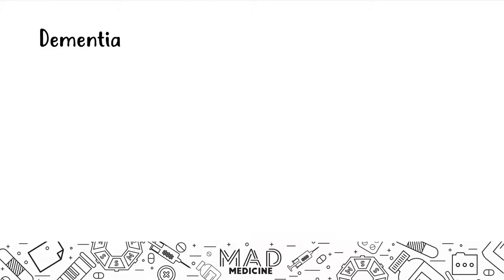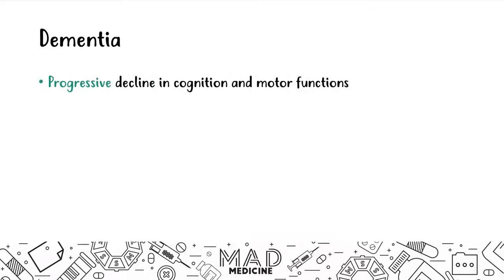Dementia is a disease that occurs very commonly, especially in the elderly population, and it's characterized by a progressive decline in cognitive and motor functions. It is not an early onset or quick rapid onset disease like delirium. Dementia is usually a progressive disease that takes time to develop and manifest completely. It can occur in young patients, but it's usually a disease of the elderly.